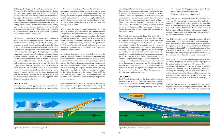For example, if VSO is 60 knots, the speed should be 1.4 × 60, or 84 knots. Landing flaps may be partially lowered if desired. Full flaps are not recommended until the final approach is established. A drift correction is established and maintained to follow a ground track perpendicular to the extension of the centerline of the runway on which the landing is to be made. Since the final approach and landing are normally made into the wind, there is somewhat of a crosswind during the base leg.